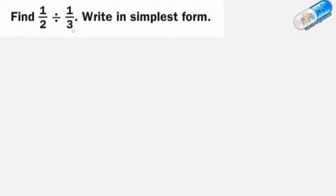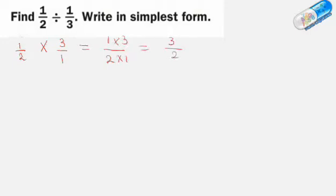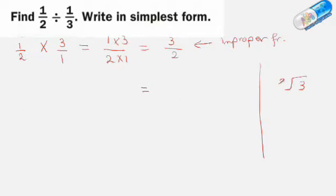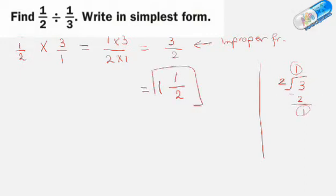Example two: find one half divided by one third and write it in simplest form. We change the division to multiplication and write the reciprocal of the second fraction. This gives 1 times 3 over 2 times 1, which is 3 over 2. This is an improper fraction — the numerator is greater than the denominator. We convert it to a mixed number using long division: 3 divided by 2 equals 1 remainder 1, so the answer is 1 and one half.